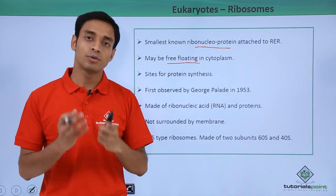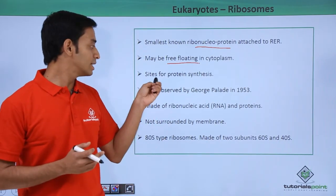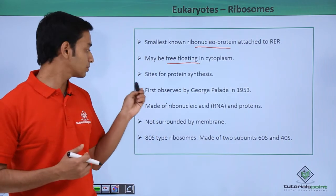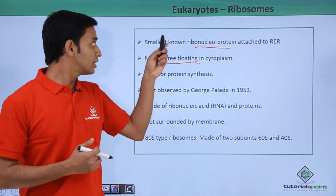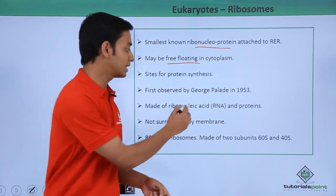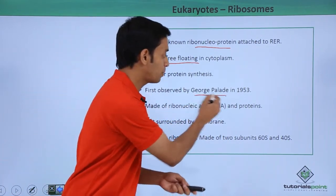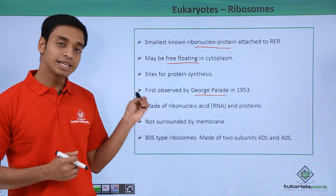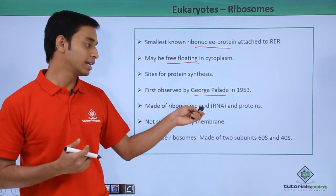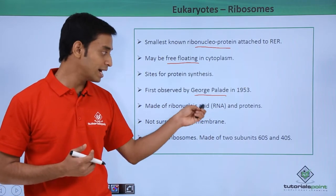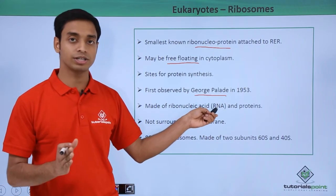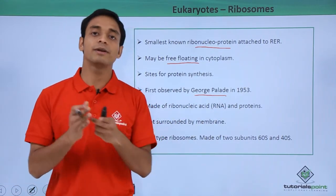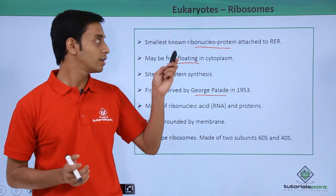So ribosomes are the sites for protein synthesis. Ribosomes were first observed by a scientist named George Palade in 1953. They are made up of ribonucleic acids — typically RNA, not DNA — along with proteins. So RNA and proteins together make up the ribosomes.